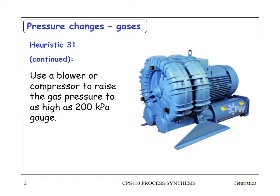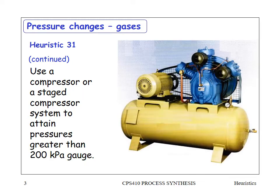Continuing with heuristic 31: use a blower or a compressor to raise the gas pressure to as high as 200 kPa gauge. Between 10 and 200 kPa gauge, one application would be to drive a fluidized bed where you need to blow gas right through a bed of sand, requiring more pressure than the mere 10 kPa. What's shown is a side-port blower — this is what we use in the pilot bay in Engineering 2 to drive the dual fluidized bed pyrolysis apparatus, including a two-stage side-port blower.